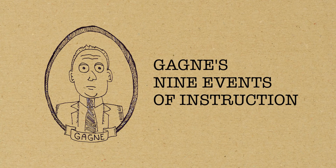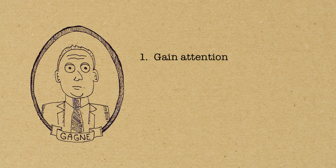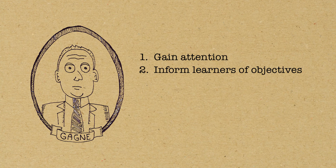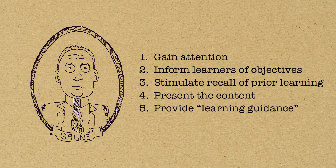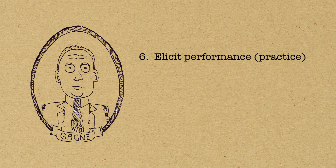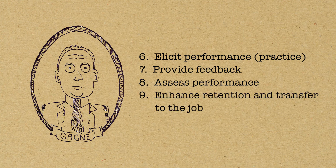Robert Gagne's Nine Events of Instruction make an effective instructional design model that addresses the conditions necessary for learning. There are nine events in the model: gain attention, inform learners of objectives, stimulate recall of prior learning, present the content, provide learning guidance, elicit performance, provide feedback, assess performance, and enhance retention and transfer to the job.